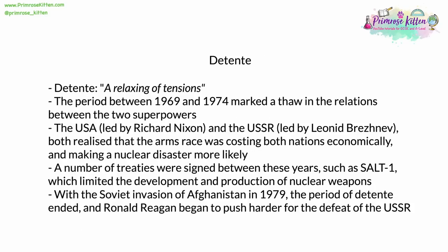The word détente means a relaxing of tensions. The period between 1969 and 1974 marked a thaw in relations between the two superpowers, where they warmed gradually but noticeably. Through this period, the USA was led by Richard Nixon and the USSR by Leonid Brezhnev. Both realised that the arms race was costing both nations economically, making a nuclear disaster, an accidental launch, or a quick hotspot in tensions more likely. A number of treaties were signed, such as SALT-1 — the Strategic Arms Limitation Treaty — which limited the development and production of nuclear weapons. However, in 1979, the Soviets invaded Afghanistan, and the period of détente was definitely over. In the 1980s, after his election, President Reagan began to push harder for the defeat of the Soviet Union.